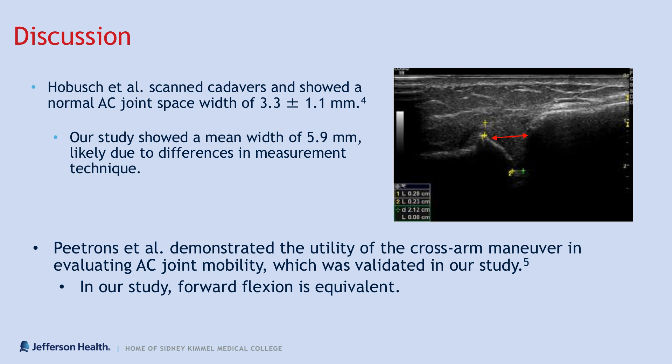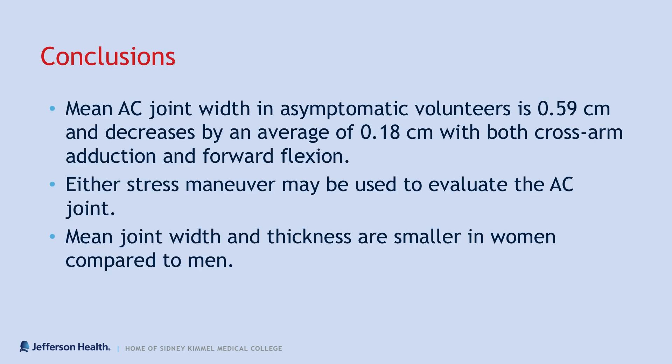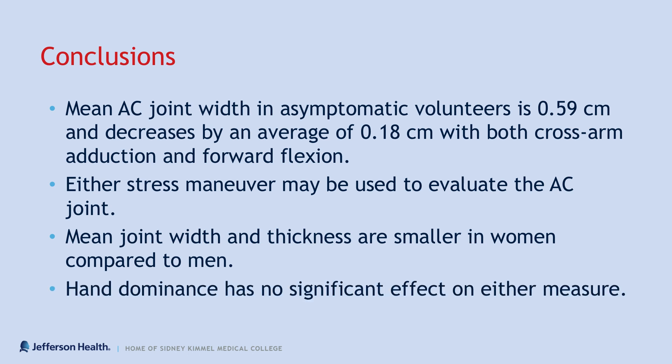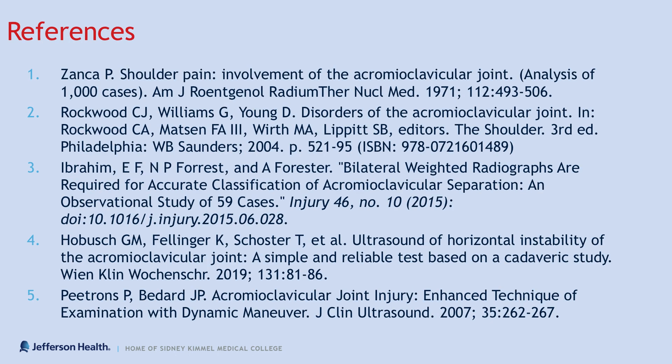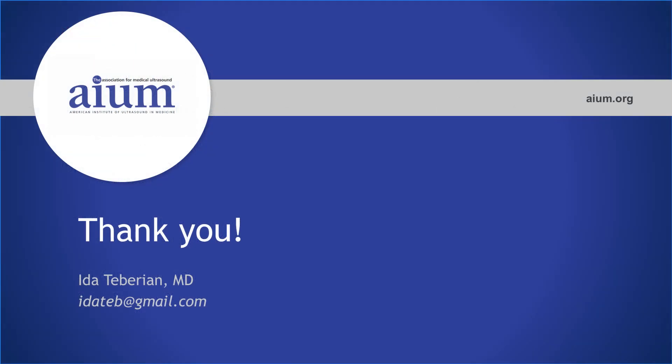We also found that forward flexion is an equivalent maneuver to cross arm adduction. Both can be used to elicit instability. In conclusion, average AC joint width in asymptomatic volunteers is 0.59 cm and decreases by an average of 0.18 cm with both cross arm adduction and forward flexion. Either of these stress maneuvers may be used to evaluate the AC joint. Mean joint width and thickness are smaller in women compared to men, and hand dominance has no significant effect on either measure. We have provided our references for you to review, and we thank you for your attention and interest. Please feel free to contact me with any questions or comments.